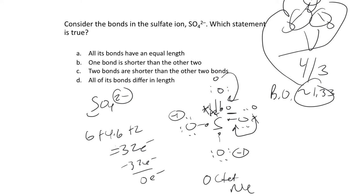For sulfate, you can imagine sketching all the other permutations - putting the double bond here or there, moving both double bonds around to come up with all kinds of resonance structures. The idea for sulfate, if you're picturing the formal charge rule Lewis structure, is that through resonance you still come to the idea that all the S-O bonds should be the same length.